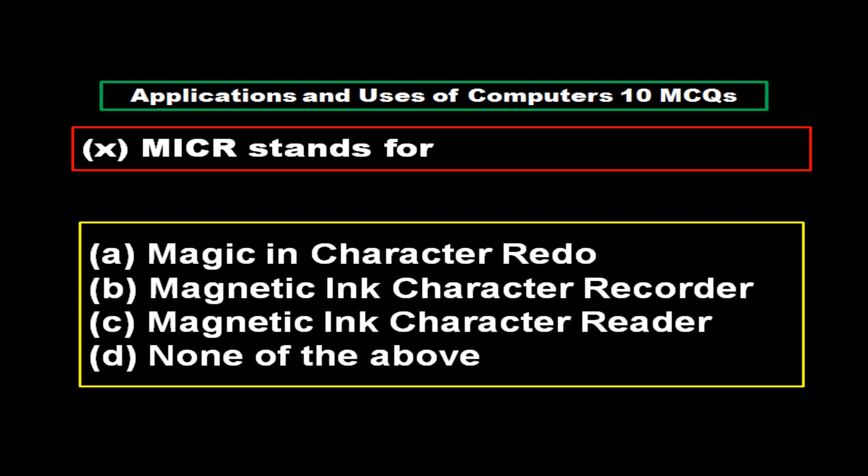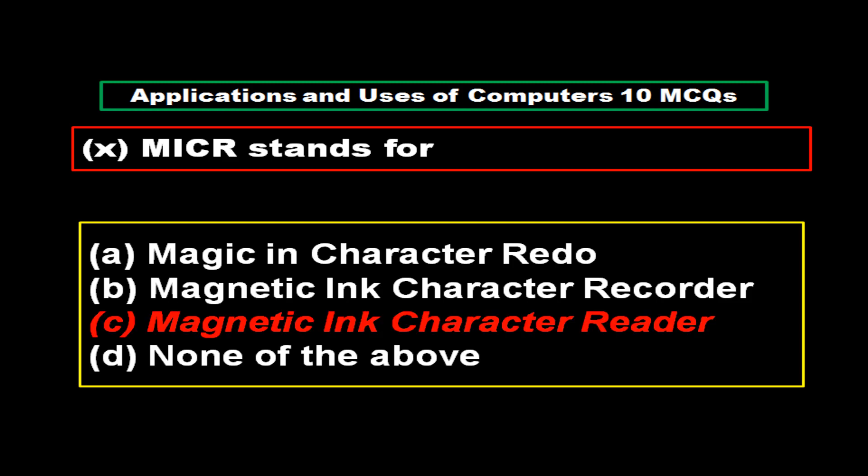MICR stands for: Option A Magic In Character Redo, Option B Magnetic Ink Character Recorder, Option C Magnetic Ink Character Reader, Option D None of the above. And the right answer is Option C: Magnetic Ink Character Reader.